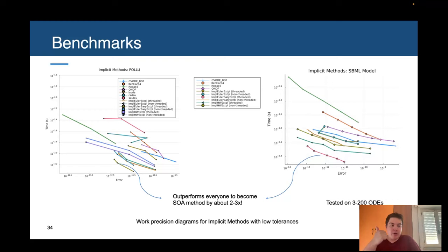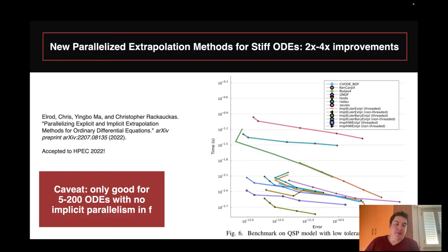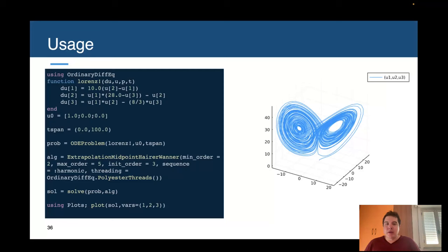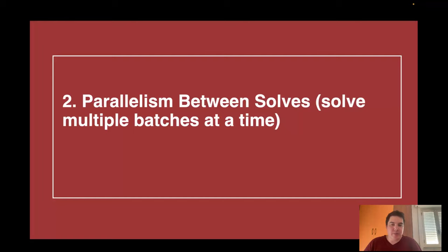One caveat is you cannot have implicit parallelism in F. This actually has a size limit on the neural networks that can be in there, because if their loss operations are multi-threading, then you'll have conflicts. In cases where you have size 16 hidden layers, this ends up being the most efficient approach for stiff UDEs. There's nothing different — you just change which algorithm you use in the ODE solver and then it becomes multi-threaded using this special method.